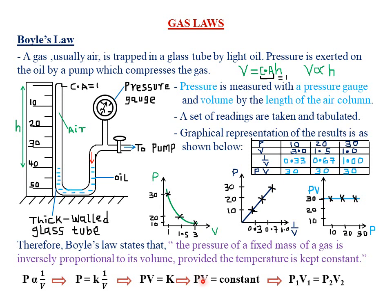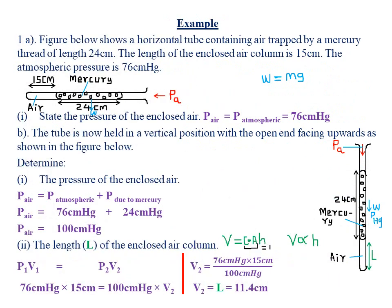If PV equals a constant, then the product of pressure and volume at any given point must be constant — as we saw in the table where PV always equalled 30. Therefore, the pressure at point one multiplied by the volume at point one must equal the pressure at point two multiplied by the volume at point two: P1V1 = P2V2.